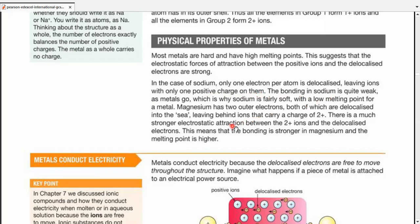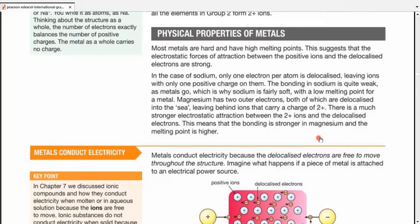The bonding in sodium is quite weak as metals go, which is why sodium is fairly soft. We can easily cut it with a knife with a low melting point for a metal. Magnesium has two outer electrons, both of which are delocalized into the sea, leaving behind ions that carry a charge of positive 2.